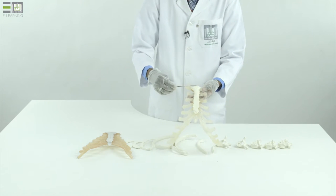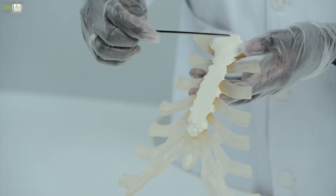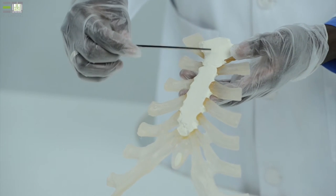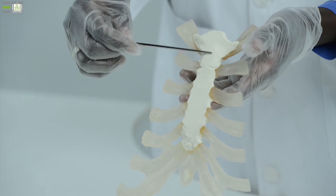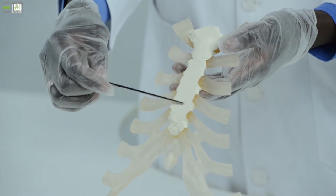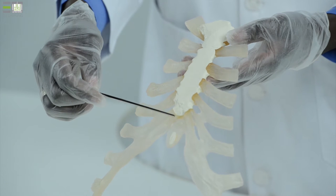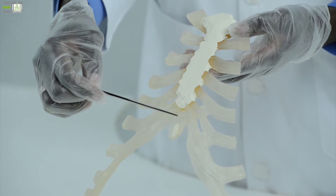The sternum, which is flat bone in the anterior part of our thorax, consists of three parts. The upper part, called manubrium. The middle part, the body. And the lower part, the xiphoid process.